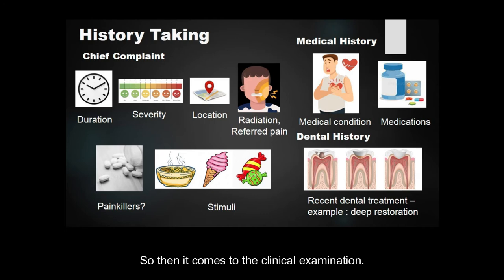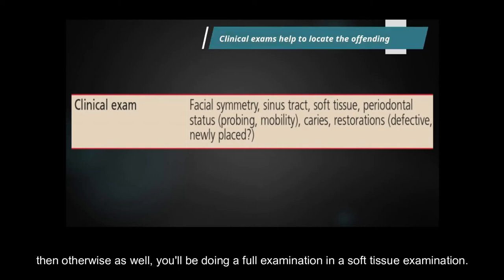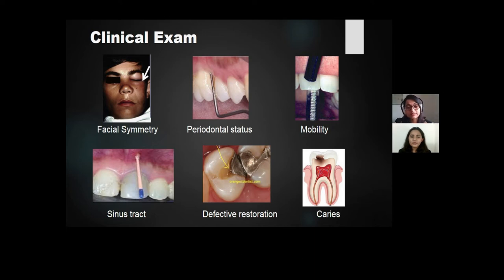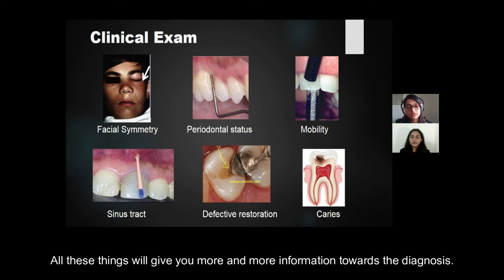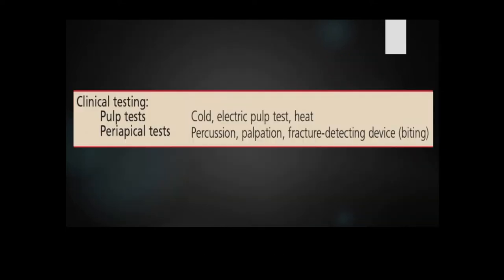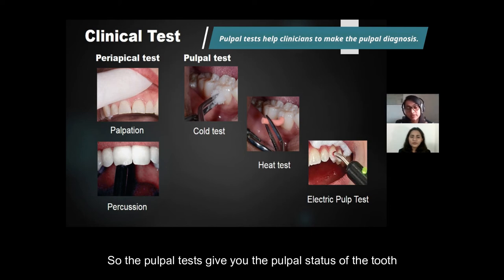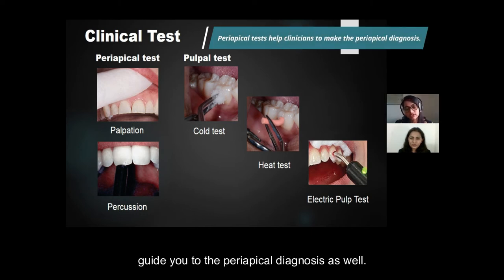If the patient can point to the tooth, or provides a history of prior treatment, you proceed with a full clinical examination — soft tissue examination, asymmetry, swelling, any sinus tract related to that tooth, mobility, probing, and assessment for caries or a leaking restoration. All of these findings provide more and more information toward the diagnosis. Clinical testing then helps determine both pulpal and periapical diagnosis: pulpal tests give the pulpal status, while percussion and palpation tests guide the periapical diagnosis.